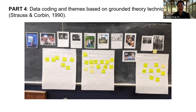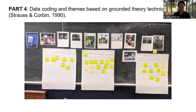After student presentations, data coding and theme-finding occur, similar to qualitative research analysis using the grounded theory technique introduced by Strauss and Corbin in 1990. Students write codes — such as 'relationship with parents,' 'bonding event,' or 'dancing' — on post-its and place them under the picture. Multiple codes are assigned to each picture and then categorized to find themes.